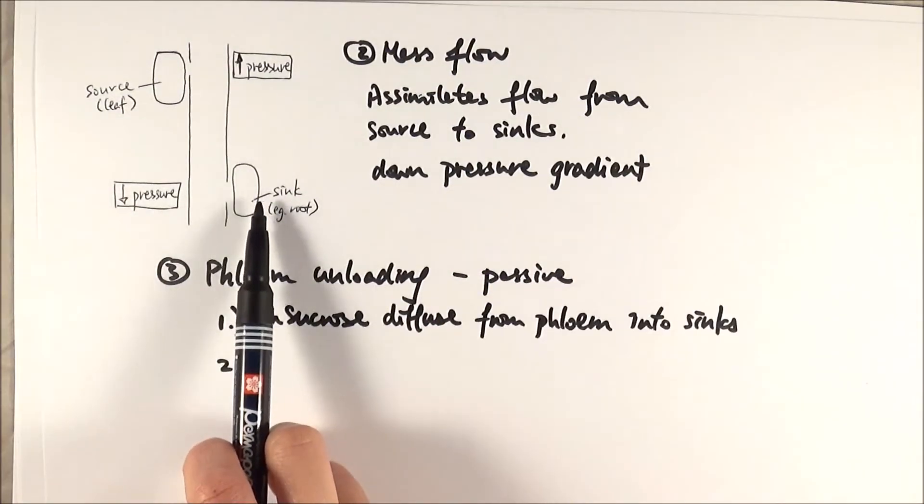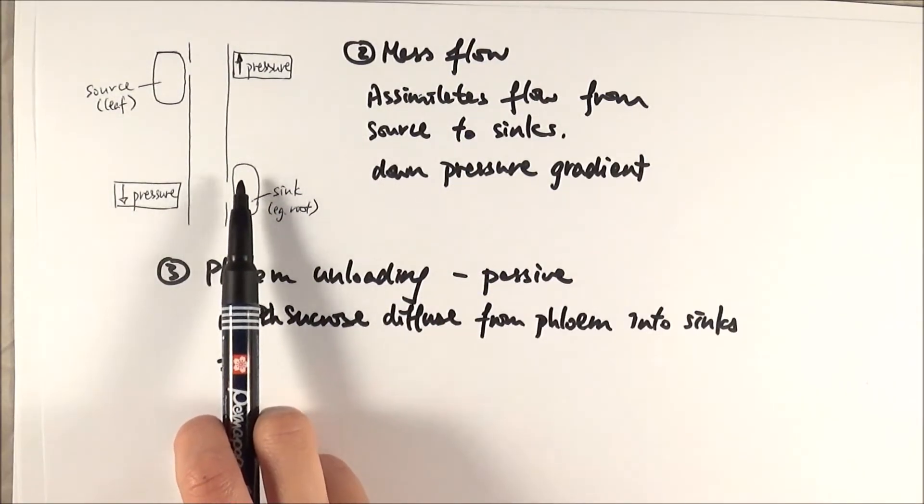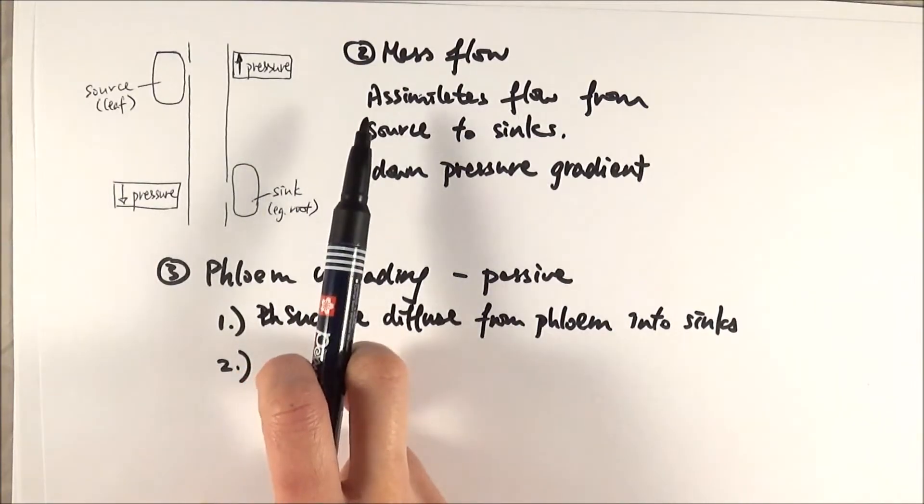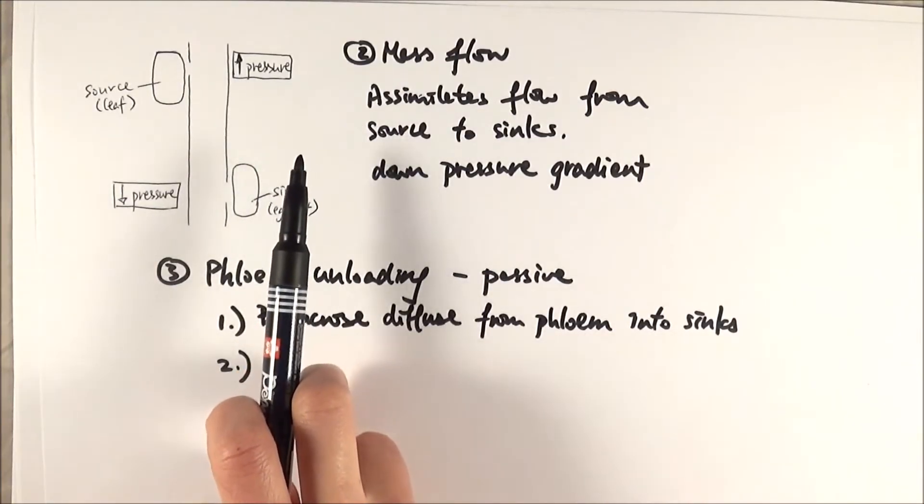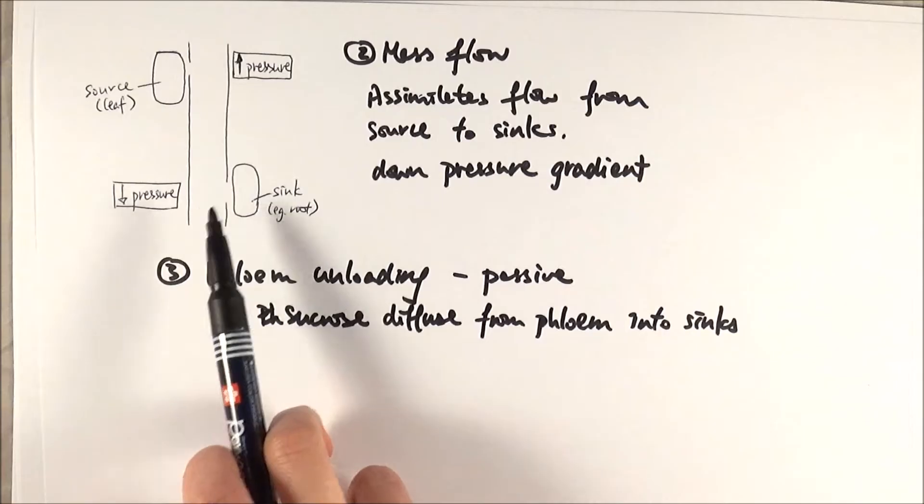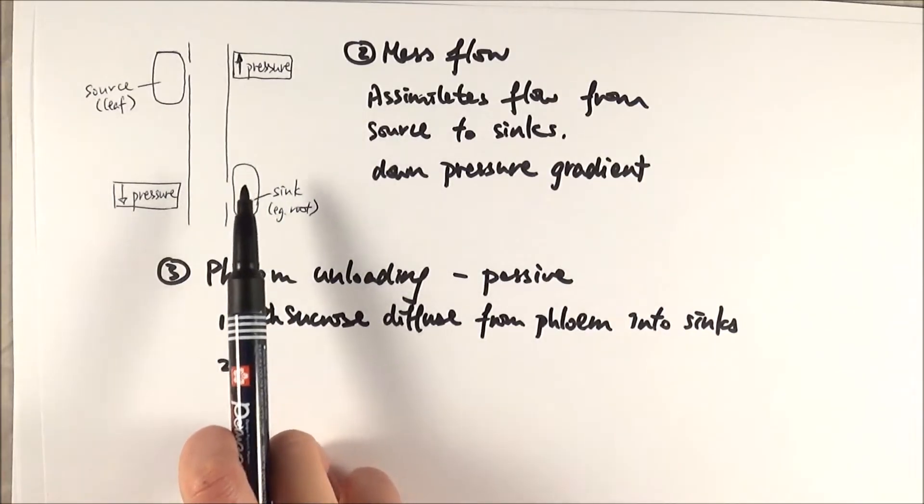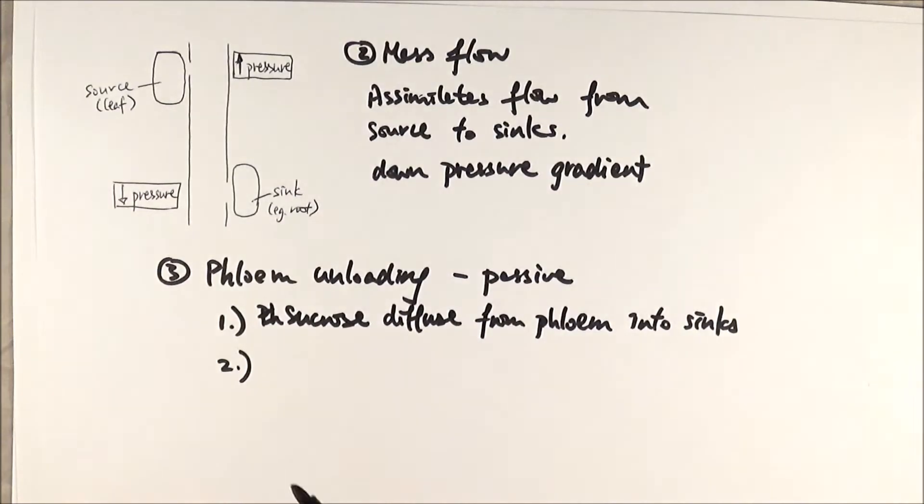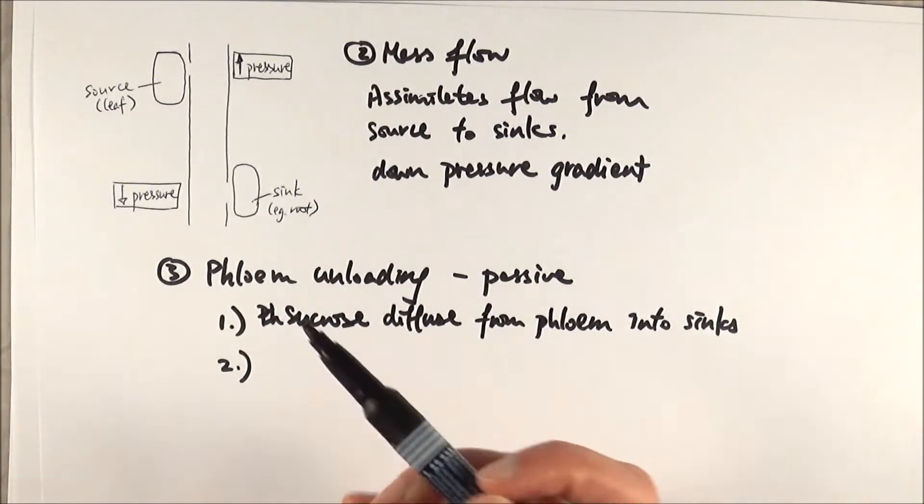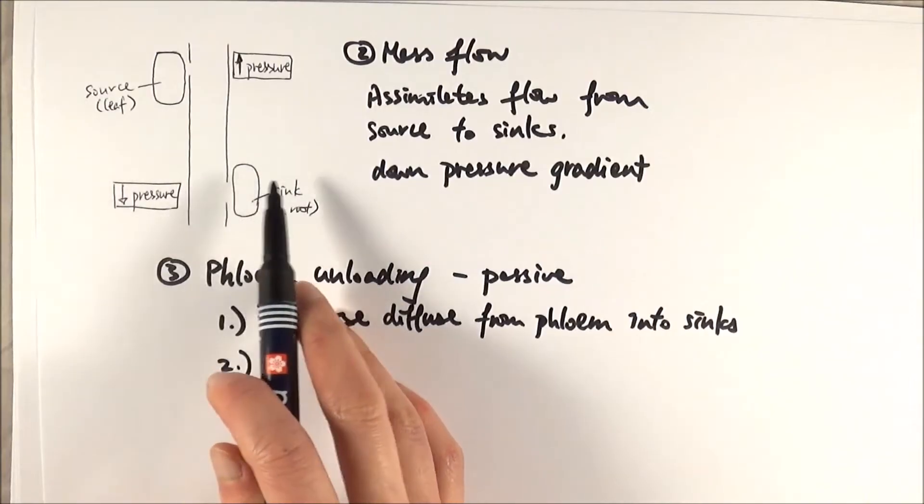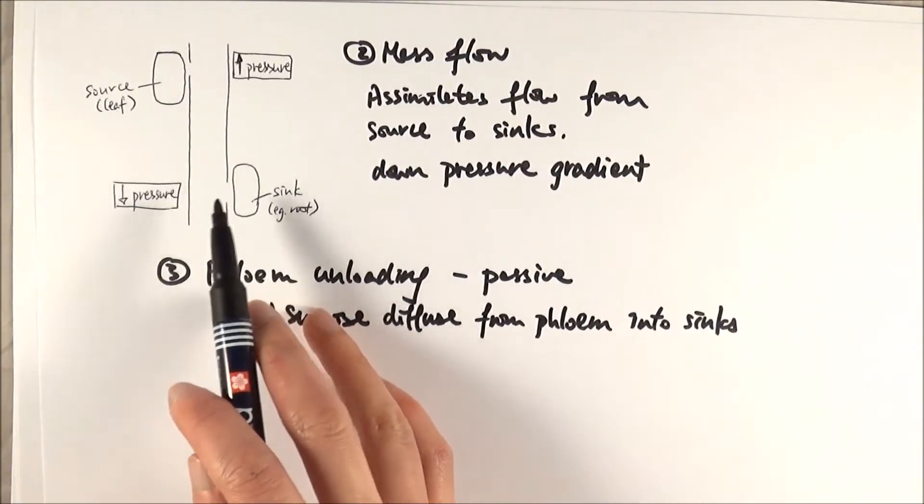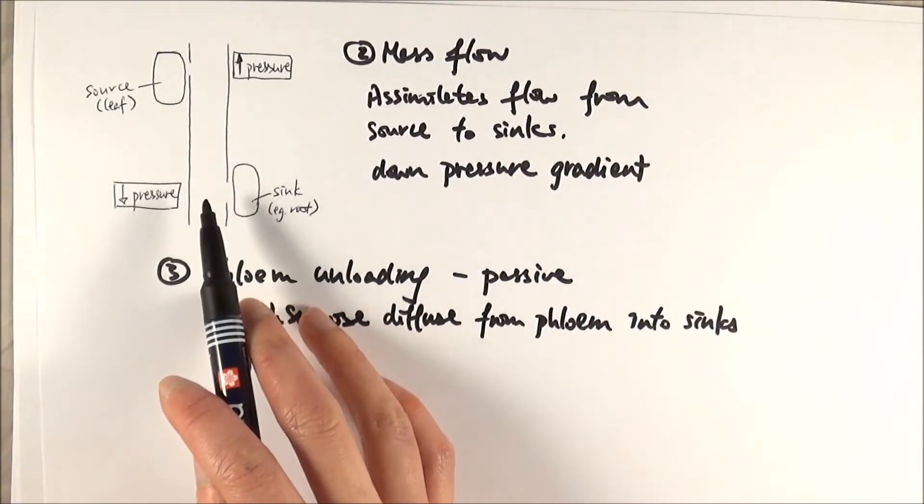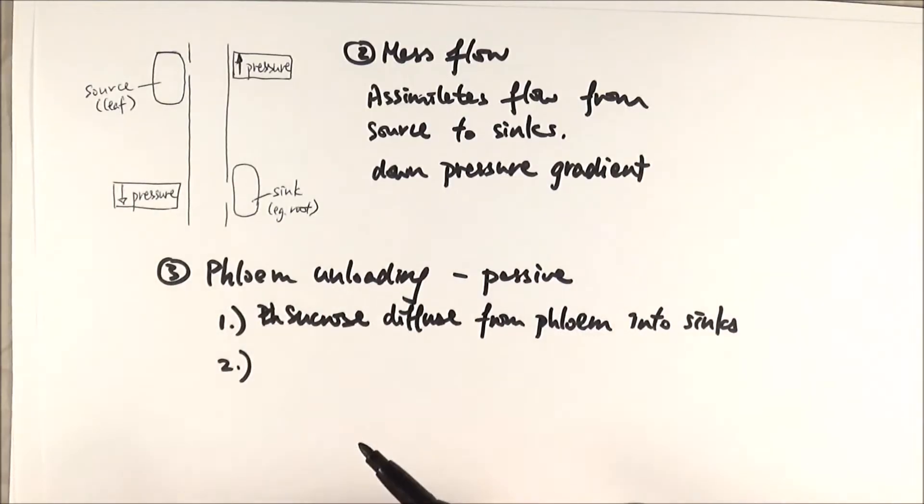So once the sucrose actually enters the cell in the sink, it will pass the sucrose along to other cells because they also need the sugar as well. So they either pass it along, or they actually convert the sucrose inside that cell to something else. And the whole point of this is to maintain the concentration gradient to keep getting the sucrose, otherwise it will just quickly reach an equilibrium and you won't get enough sucrose in the end.